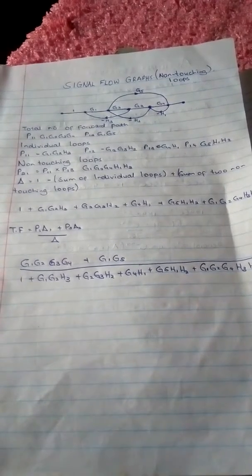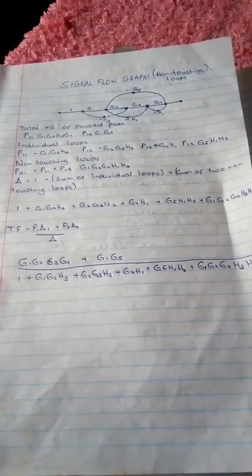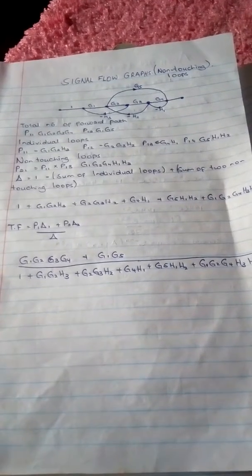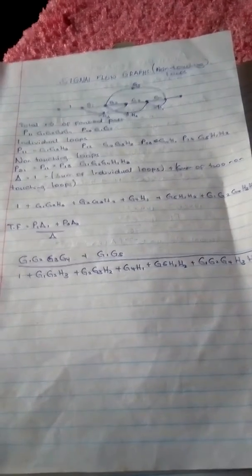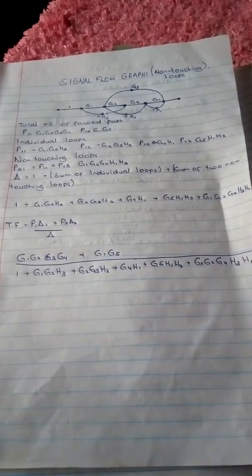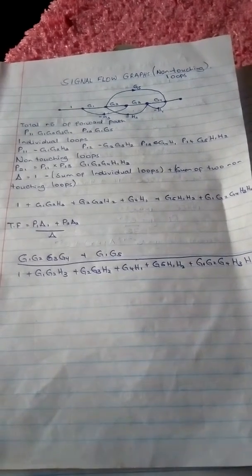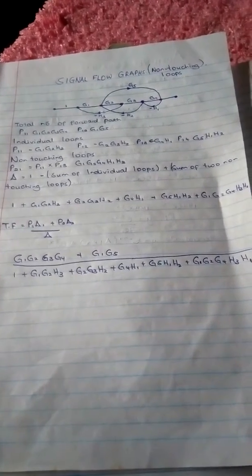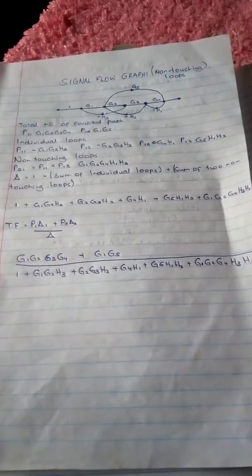The denominator is where you write the Delta value, for example that is 1 plus G1 G2 G3, and that's the transfer function. Hope this has helped you.